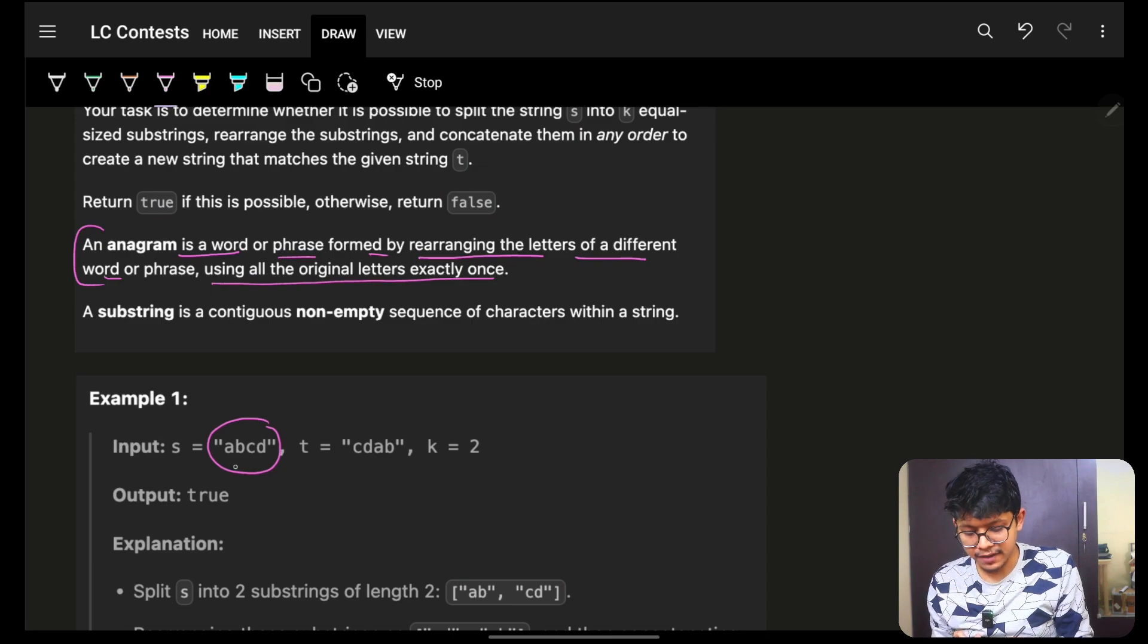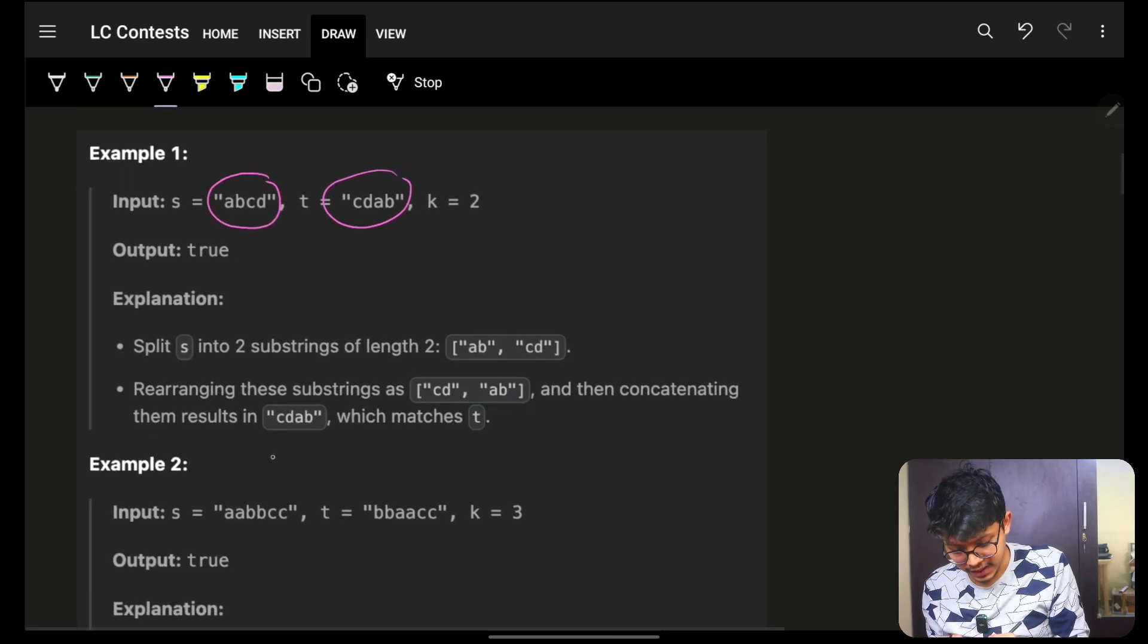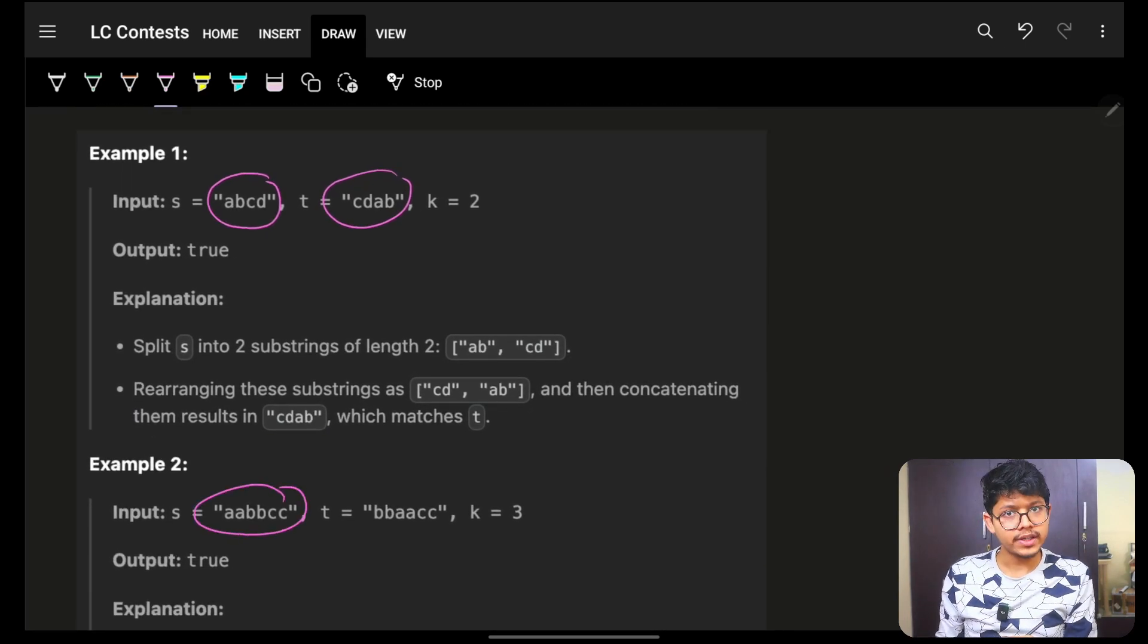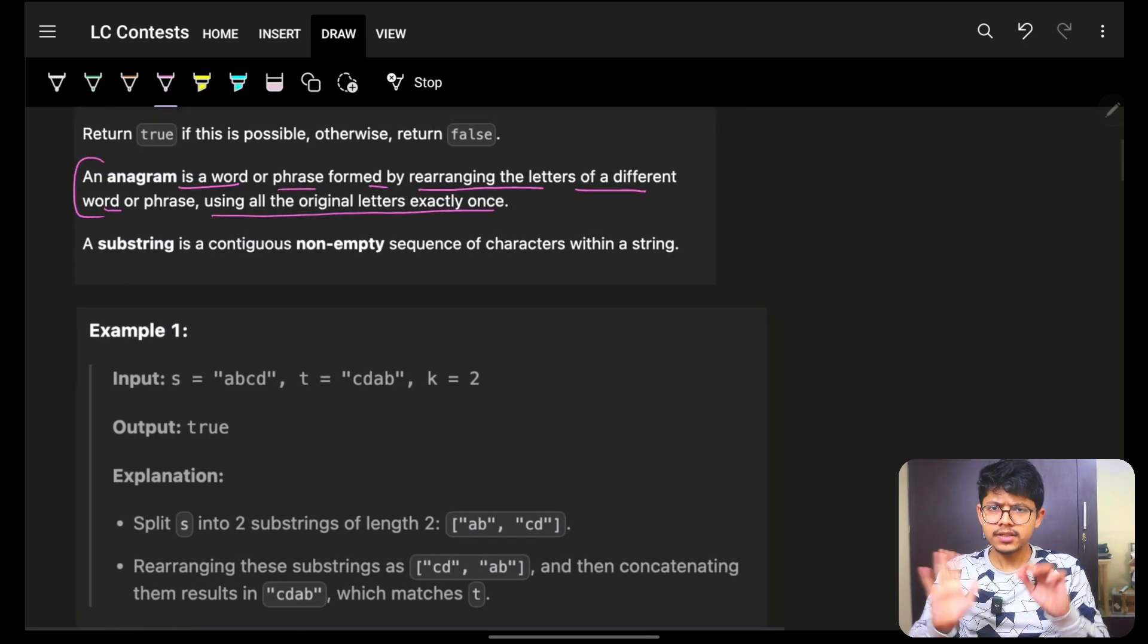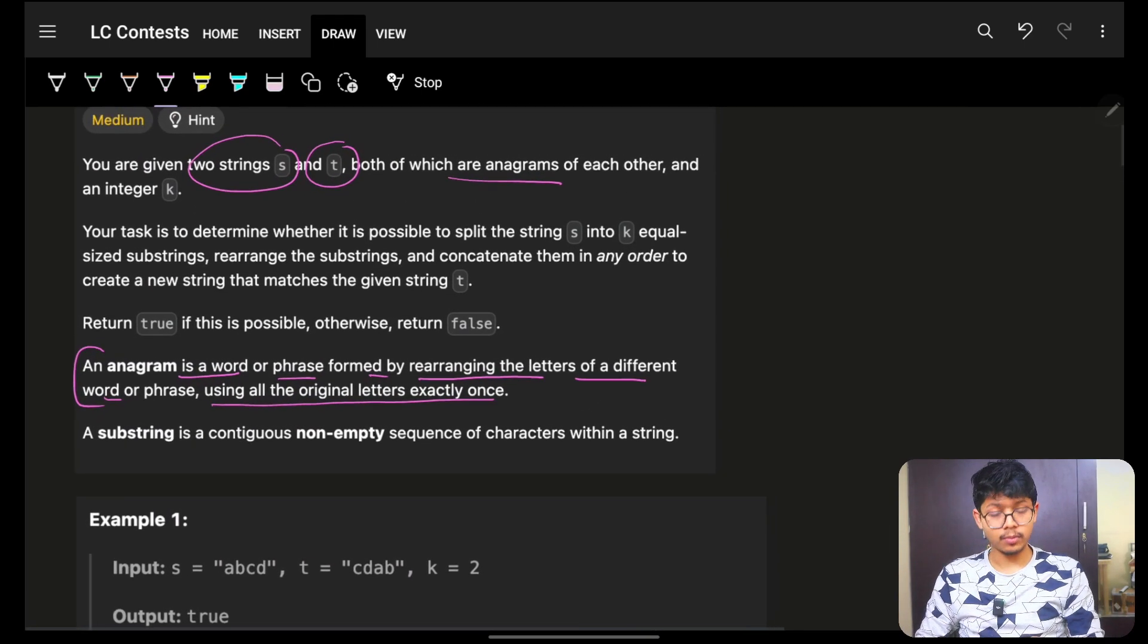So if in this, I have a as 1, b as 1, c as 1, d as 1. Here also, a will be 1, b will be 1, c will be 1, d will be 1. Here, if I have a as twice, b as twice, c as twice, here also, same count of each character will be there. And obviously, we have log as characters. That's pretty much what the problem is saying.